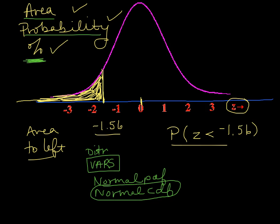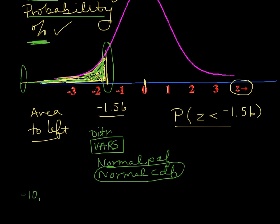Once you've told the calculator you want a normal probability from a normal distribution, it needs to know the leftmost point of that area and the rightmost point. For these problems, you're going to use a z-score of negative 10,000 to represent negative infinity, and positive 10,000 to represent positive infinity. If your area goes all the way to the left toward infinity, use negative 10,000. If it continues to the right, use 10,000.